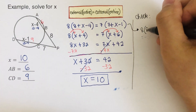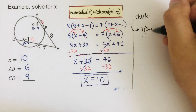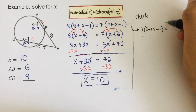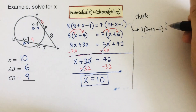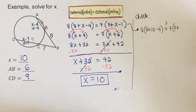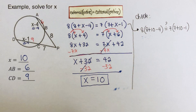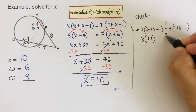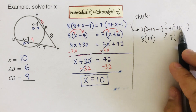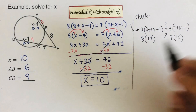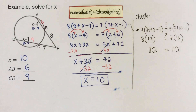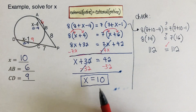Checking: 8 times (8 + 10 − 4) equals 7 times (7 + 10 − 1), so 8 times 14 equals 7 times 16, which gives 112 equals 112. This confirms that x = 10 is correct.